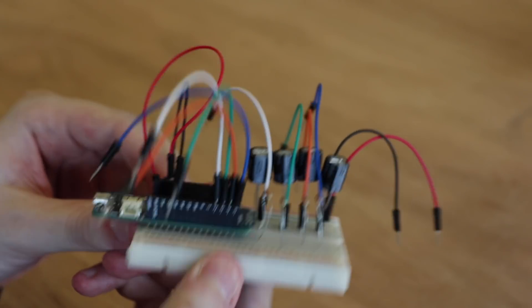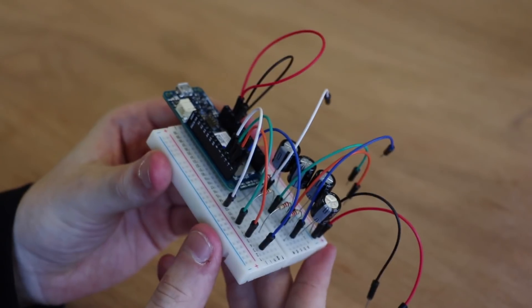Lastly, connect pins 2-5 to the front end of the resistors. The circuit will look like this.